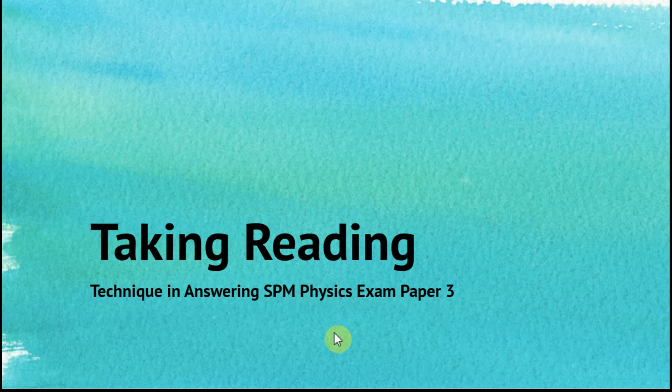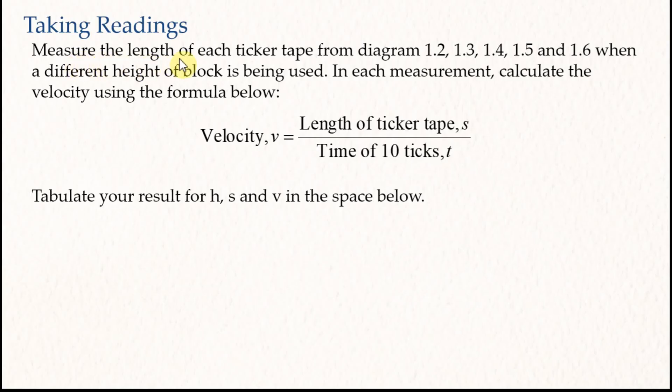The second sub-question in Paper 3 Question 1 is about taking readings from given images, using the data to do calculations, and recording all the information in a table. Therefore there are three parts in this sub-question. For example: measure the length of each ticker tape from diagrams 1.2, 1.3, 1.4, 1.5, and 1.6 when a different height of block is used. Calculate the velocity using the formula given, and then tabulate your results for h, s, and v.